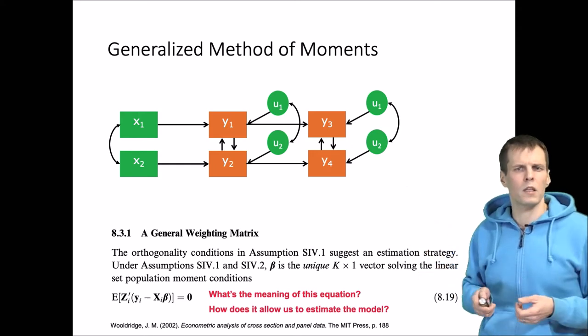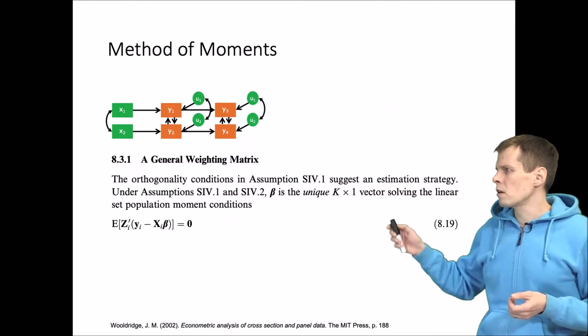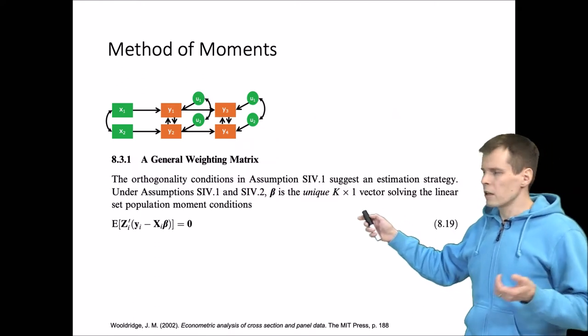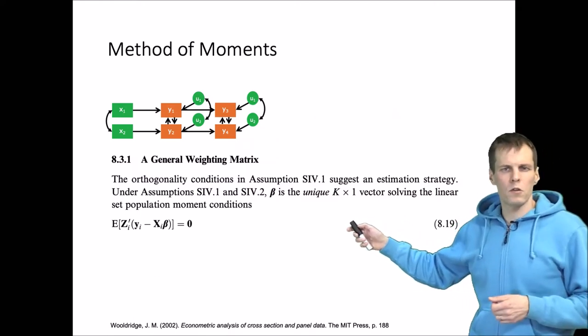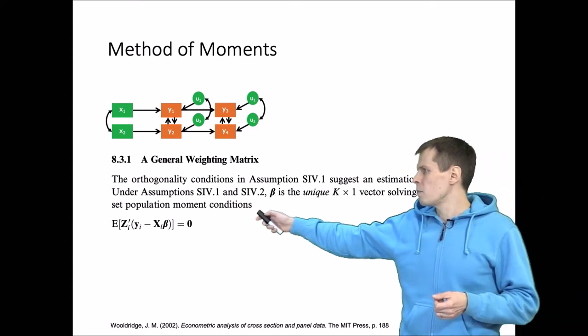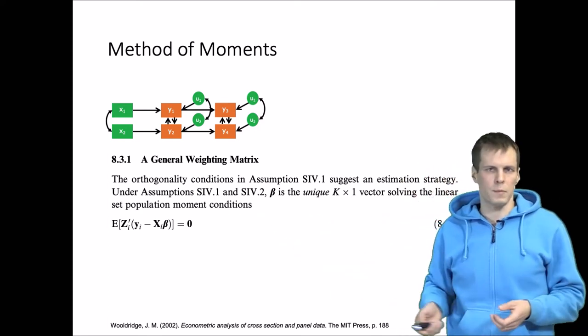Let's take a look at the equation a bit closer. The equation here has a couple of things: we need to understand what z is, what y minus x beta is, and what's the expectation.